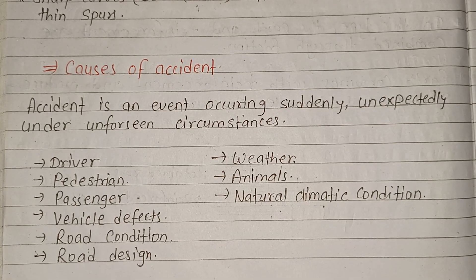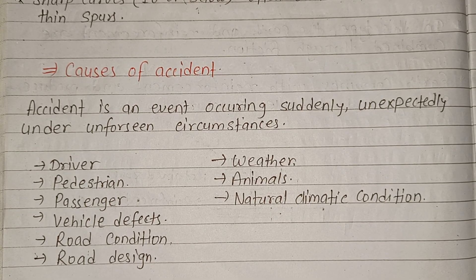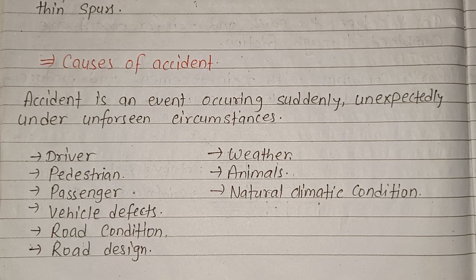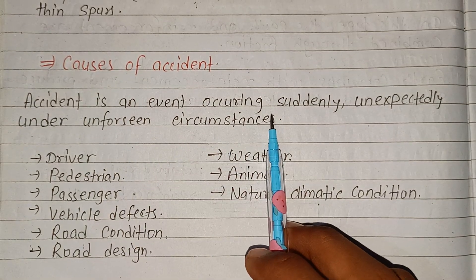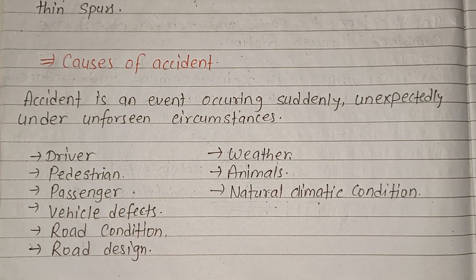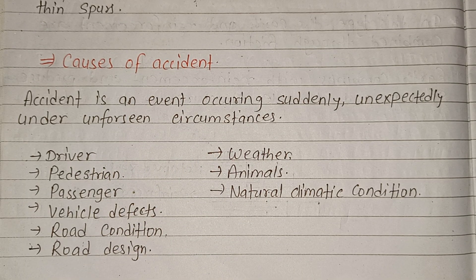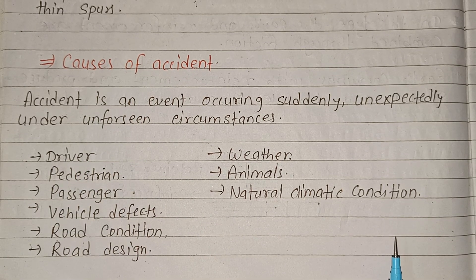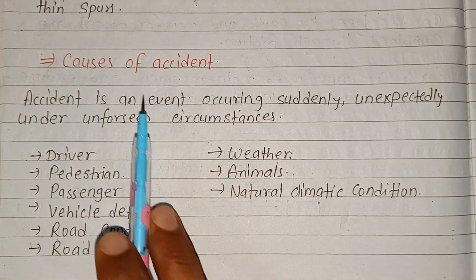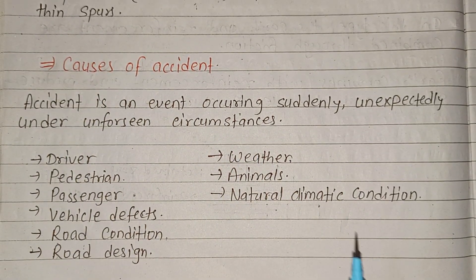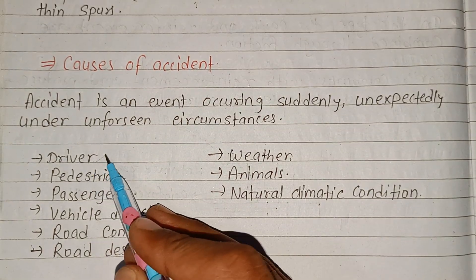Now the causes of accidents. An accident is an event occurring suddenly, unexpectedly, under unforeseen circumstances. The following are the main causes of accident.